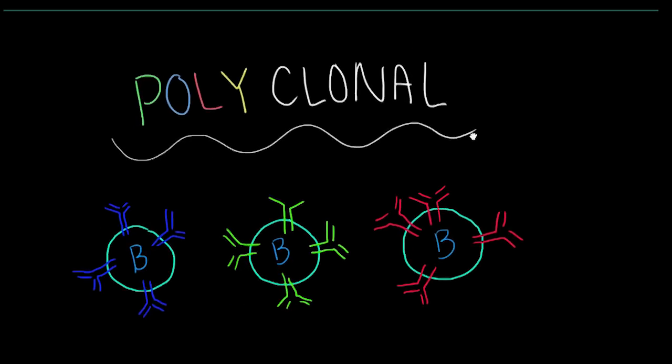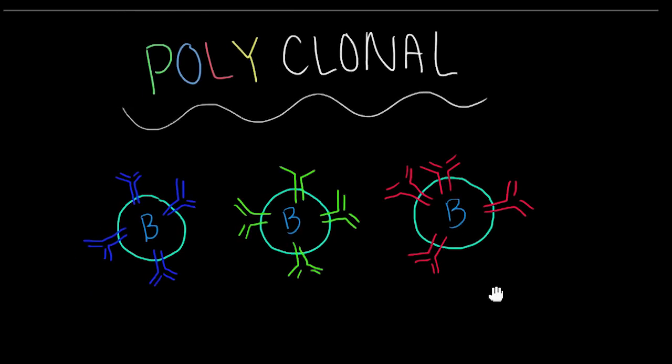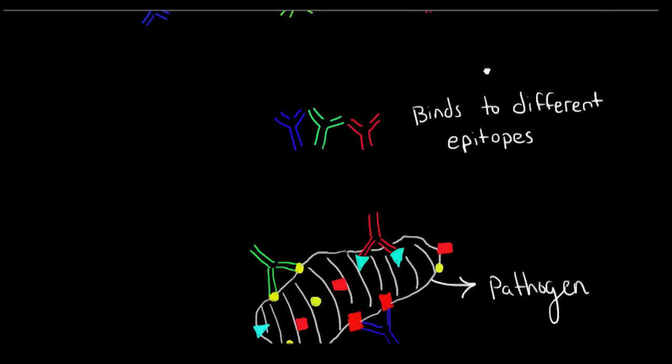In contrast, polyclonal antibodies, as you can tell by its name, are secreted by different B-cell lineages, and thus have multiple corresponding epitopes, or binding sites.